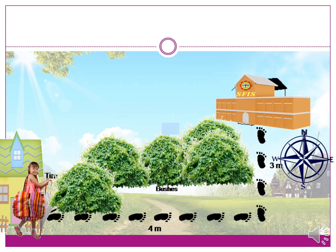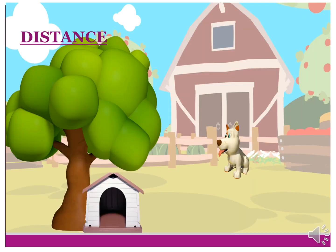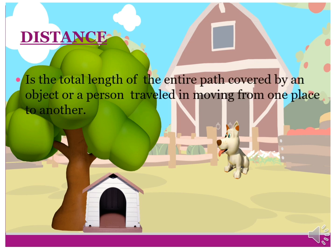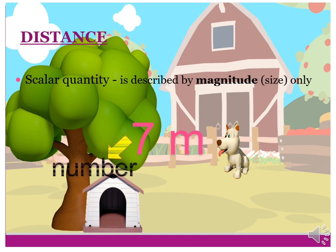Let us discuss first the distance. Take a look at this illustration. What is the total length that teen traveled from their house going to SFIS? From their house, from west to east, is 4 meters, and going north, it is 3 meters. Distance is the total length of the entire path covered by an object or a person traveling from one place to another. Distance is also a scalar quantity — described by magnitude or size only. For example, 7 meters: 7 is the number and M is the unit for meters.